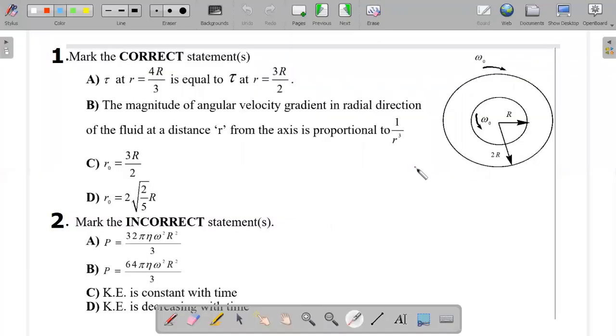That's a description of the situation. These are the two problems that you have to solve. First question deals with four different options in which first one is talking about the torque comparison at two different positions. Second one is about angular velocity gradient in radial direction at a distance r, whether it could be proportional to 1/r³ or not. Then the value of r₀, which is the position where the fluid element remains at rest or angular velocity of that is zero. These are all more than one correct type answers that you have to match. Similarly marking the incorrect statements in the second one.